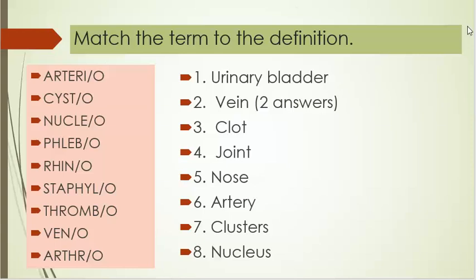Okay, folks, this is the second part of medical terminology, lesson 15. Due to its length, I'm dividing it up. So, we have the terms over here: arterio, systo, nucleo, phlebo, rhino, staphylo, thrombo, venno, and arthro.